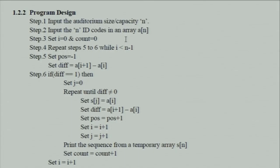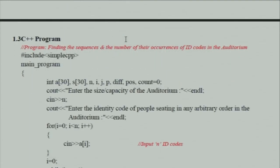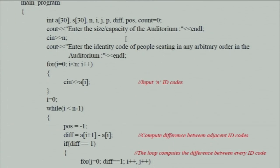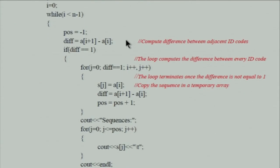The C++ program finds sequences of numbers and the number of occurrences of ID codes in the auditorium. Given n ID codes, compute the difference between every adjacent pair. The loop runs n minus 2 times because the last comparison is between n-1 and n-2. If the difference between two consecutive locations is 1, it gives a sequence, and the counter is incremented by 1.